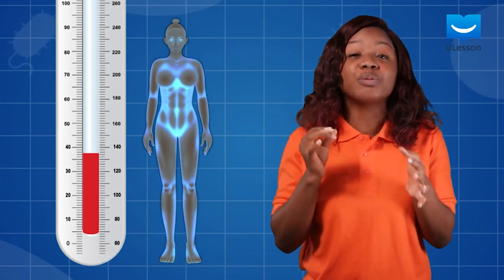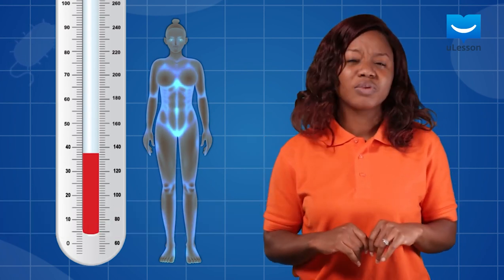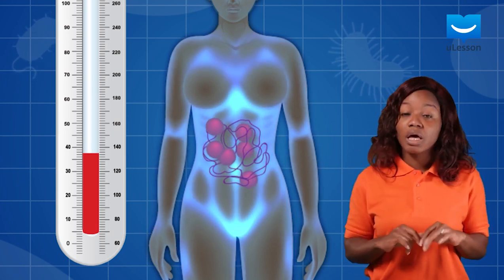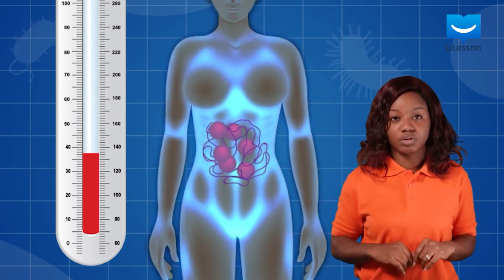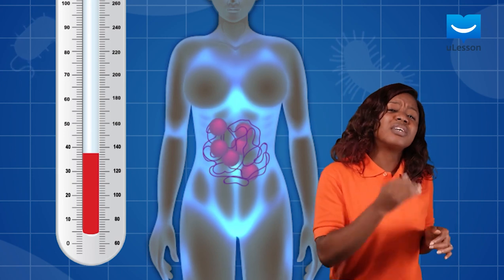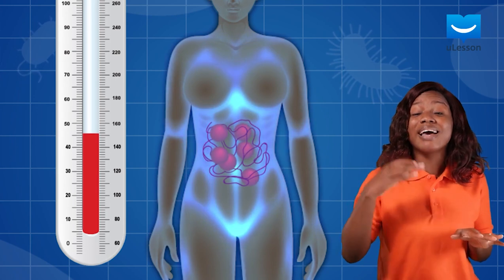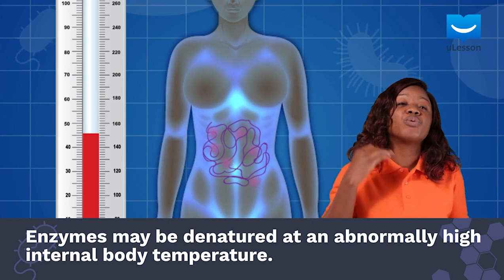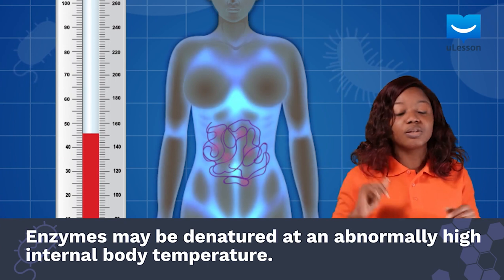Let's learn about how the body keeps the conditions of its internal environment constant. Most enzymes are proteins and they function optimally within a small temperature range, about 36.5 to 37 degrees Celsius. If the internal body temperature rises abnormally, say to a value significantly higher than 37 degrees Celsius, enzymes may be denatured and they will be unable to catalyze life-sustaining biochemical reactions within the body.